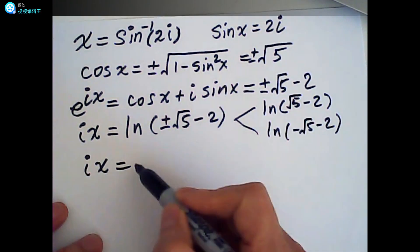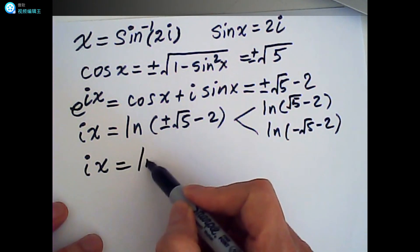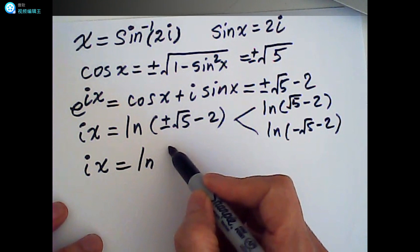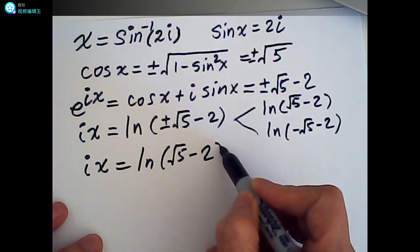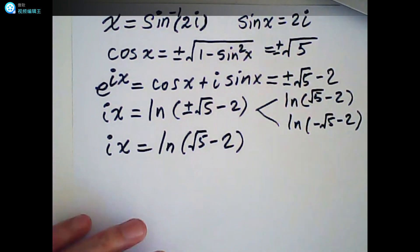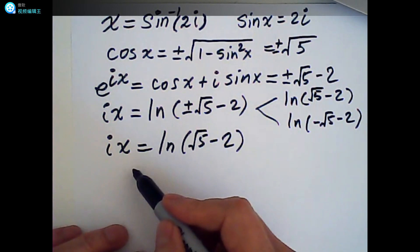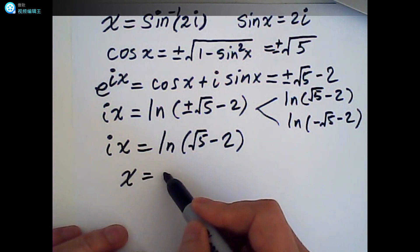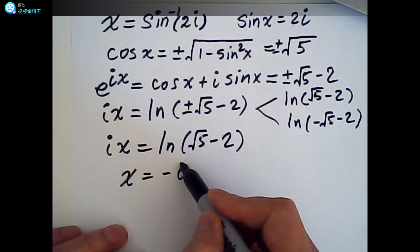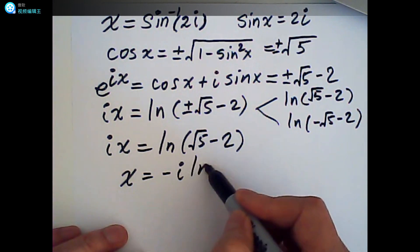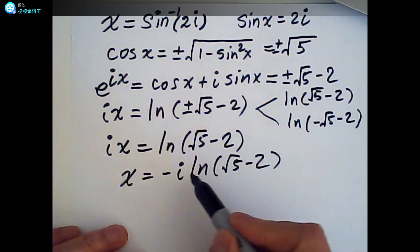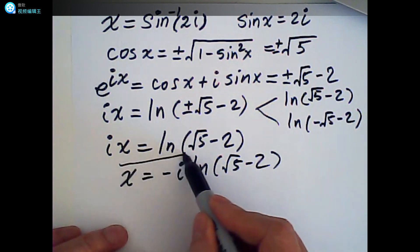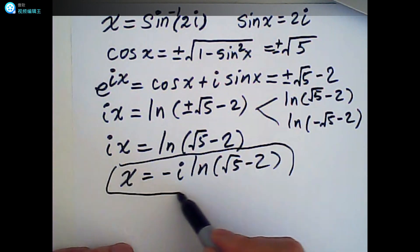If this is the case — natural log(√5 minus 2) — then obviously x is equal to negative i times natural log(√5 minus 2). So that is one solution.